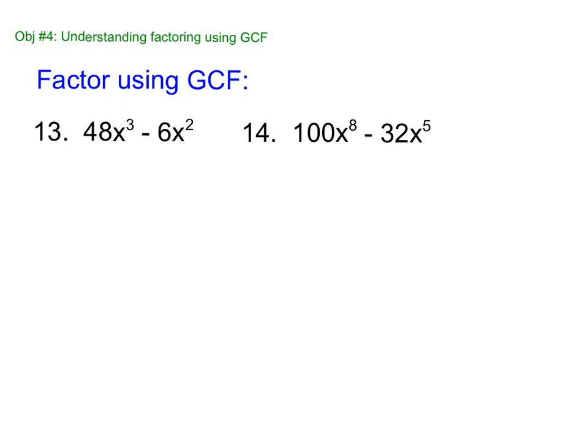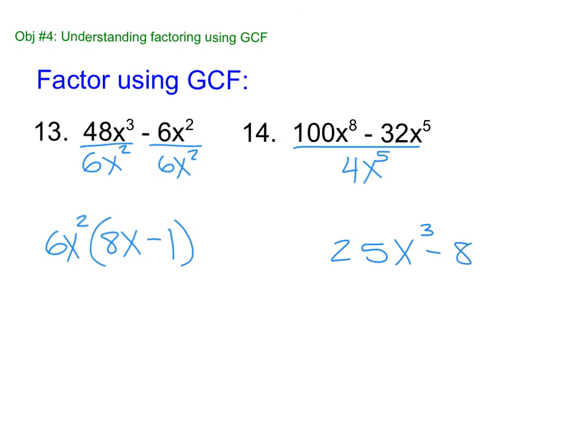All right, last slide. Pause it. See if you can do this on your own. All right. So this one is 6X squared. Divide. I get 8X minus, what's anything divided by itself, 1, parentheses, 6X squared on the outside. And the last one. What is the GCF here? I think it's 4. Pretty sure it's 4. Smaller X is 5. I have 4 quarters, so 25X to the third minus 8. Parentheses, GCF on the outside.